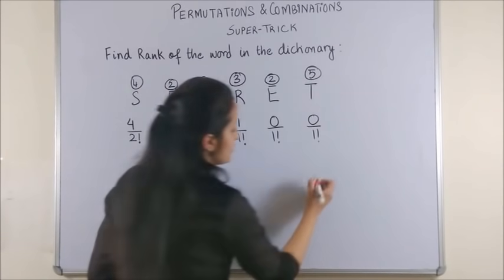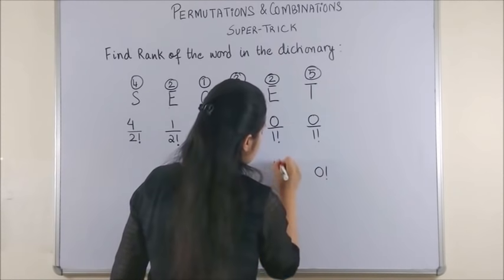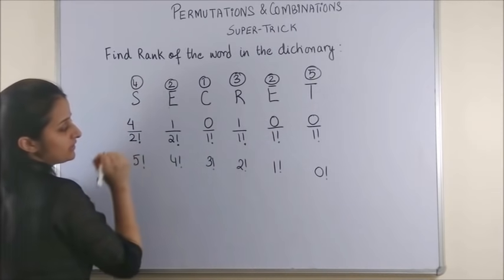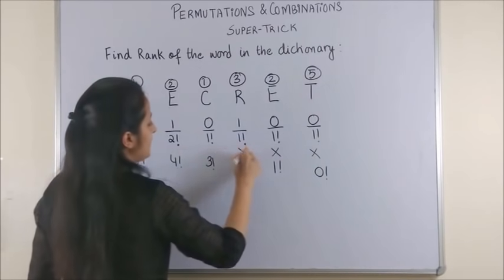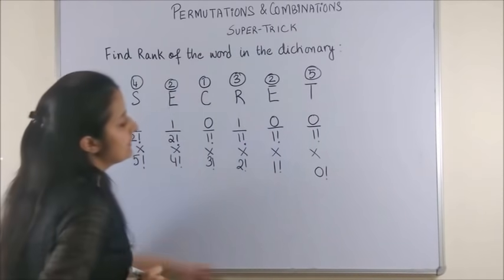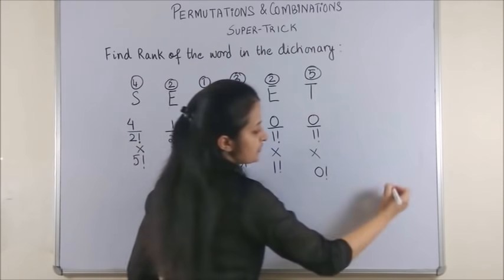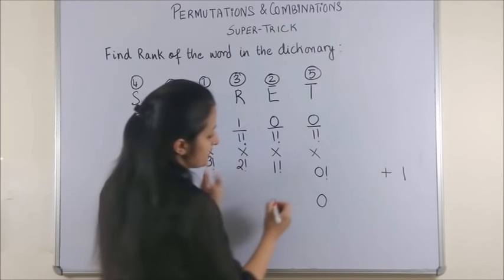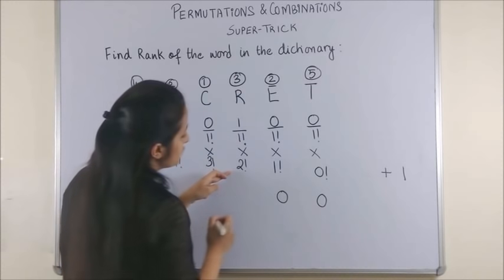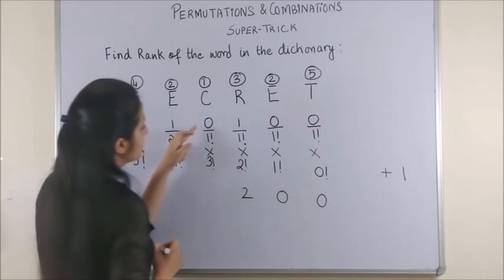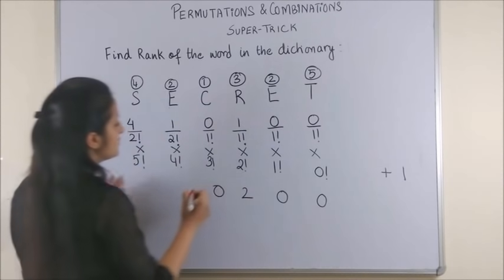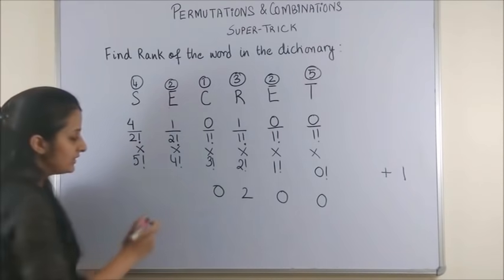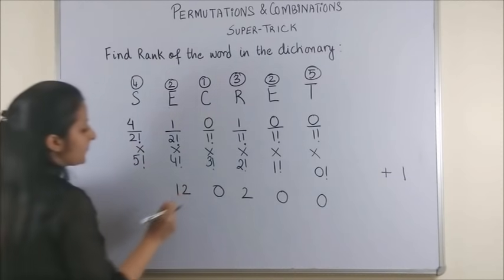Now, just like in previous video, we would write 0 factorial, 1 factorial, 2 factorial, 3 factorial, 4 factorial and 5 factorial. Now, we multiply each of them. Let's see what we get. And to the final answer, we would add 1. This is going to be just a 0. This is again 0 into something which is a 0. 1 into 2 factorial would be a 2. 0 into 3 factorial would be a 0. So, this is 4 factorial by 2 factorial. On solving, you will get 4 into 3. That's only 12.